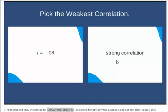So first activity we're clicking on the weakest correlation, that is the correlation that is closest to zero. Weakest correlation would be zero itself, the strongest correlation would be either a positive one or a negative one, both of those are equally strong.